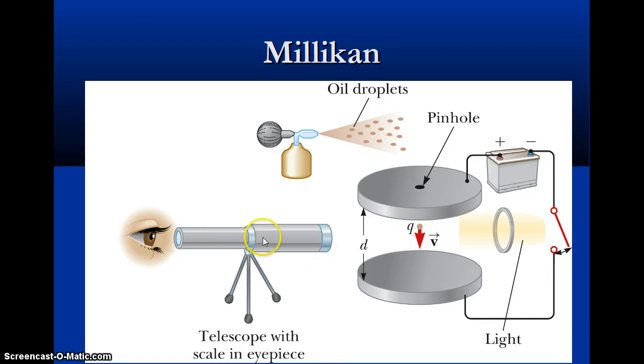So what was happening, he was watching that and they could figure out the size of the droplets so they could get the mass. They just assumed the oil was uniform density. They could figure out how much mass there was. And if it was falling at a constant rate or standing still, the weight downwards had to equal the electric force upwards.